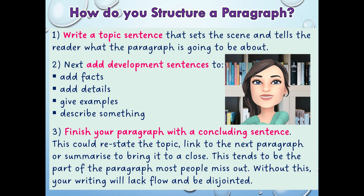One way you could link to another paragraph is by introducing the next topic in your concluding sentence. For example, if I had written a paragraph about why I love the colour yellow, my last sentence might be: 'That is why I prefer the colour yellow to the colour blue, which I hate.' My next paragraph could then be all about why I hate the colour blue. I don't hate the colour blue, by the way — that was just a hypothetical.